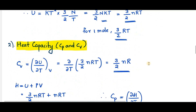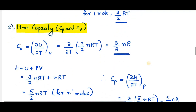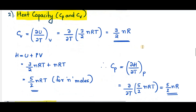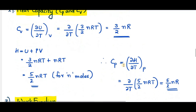Similarly we can find out other thermodynamic properties such as heat capacity, work function, entropy, etc. Cv is (∂U/∂T) at constant V, so that is (∂/∂T) of (3/2)NRT = (3/2)NR for N moles. For Cp, since H = U + PV = (3/2)NRT + NRT = (5/2)NRT for an ideal gas, Cp = (∂H/∂T) at constant P = (5/2)NR for N moles of an ideal monoatomic gas.